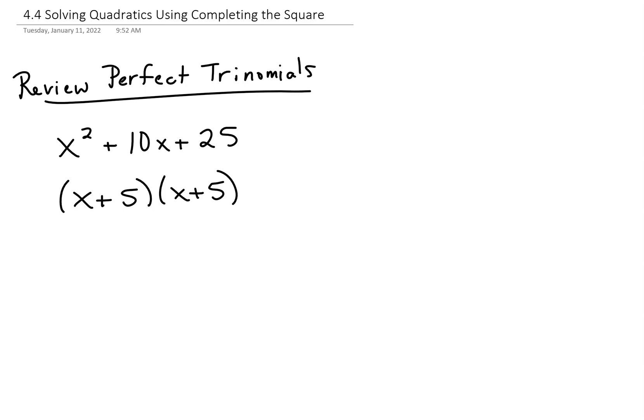So instead of writing it like this, you can write it like this, x plus 5 squared. And as always, you said, do I have to? And I said, no. But today, we do. So today, our goal is to write them like this. That's what we're going to do.